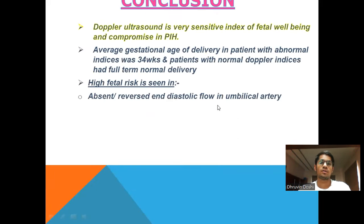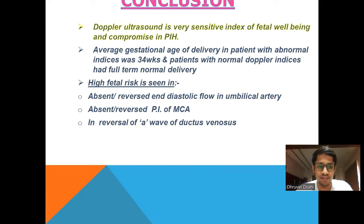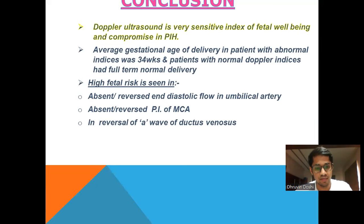Conclusion: Doppler ultrasound is a very sensitive index for fetal well-being and compromise in PIH. The average gestational age for delivery in patients with abnormal indices was 34 weeks, while patients with normal Doppler indices had full-term normal delivery. High-risk fetal signs include absent or reversed diastolic flow in umbilical artery, absent or reversed PI of MCA, and reversal or absence of the A wave in ductal stenosis.